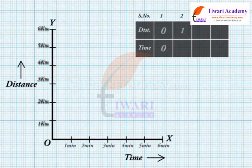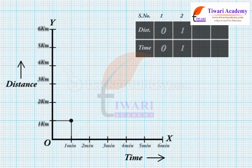To mark the point for one minute and one kilometer: find the point representing one minute on the x-axis and draw a line parallel to the y-axis. Then draw a line parallel to the x-axis from the point corresponding to one kilometer on the y-axis. The point where these two lines intersect represents this set of values on the graph.